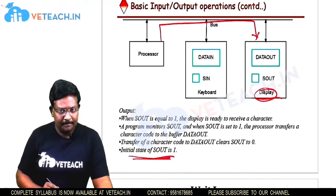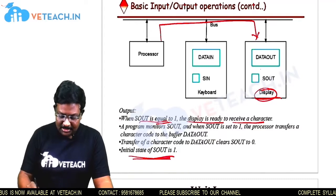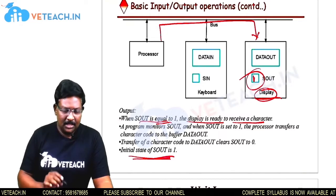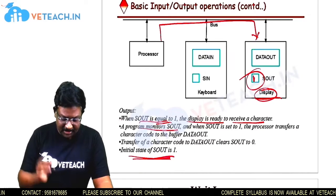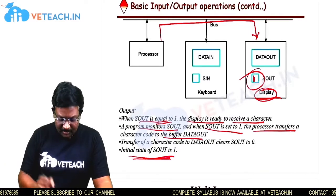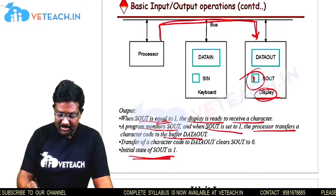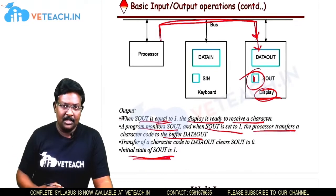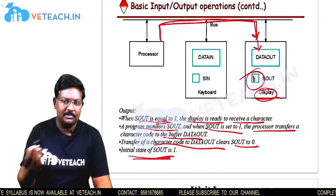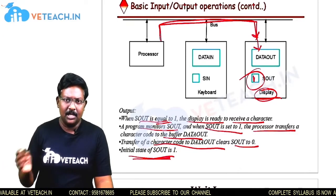Initially SOUT should be 1. When SOUT equals 1, the display is ready to receive a character, meaning the output device is ready. The program monitors SOUT, and when it is set to 1, the processor transfers a character code to the buffer register called DATAOUT. After transferring the complete information to the DATAOUT register, SOUT is cleared to 0.